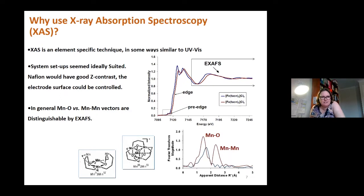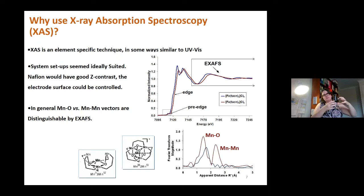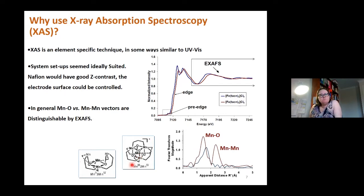What makes X-ray absorption spectroscopy special is that you can get structural information on pretty much any material at all — a soil, a sediment, a functional material. You can home in on the function of a particular metal within that material. For this manganese system, the XAS spectrum is particularly sensitive to manganese-oxygen bonds or manganese-manganese bonds because they produce quite distinct patterns. I knew this would be a really good technique to get to the bottom of this system.